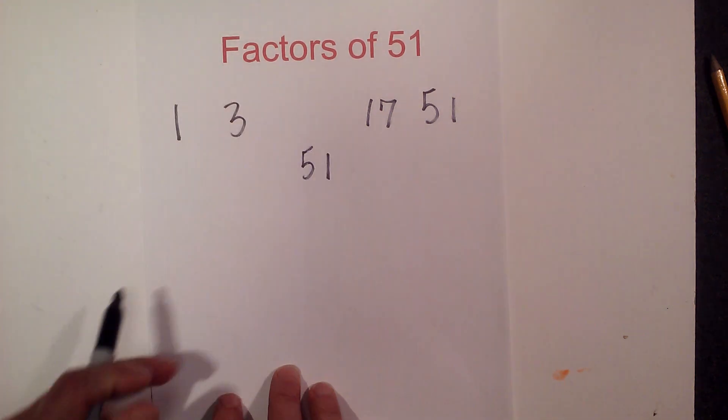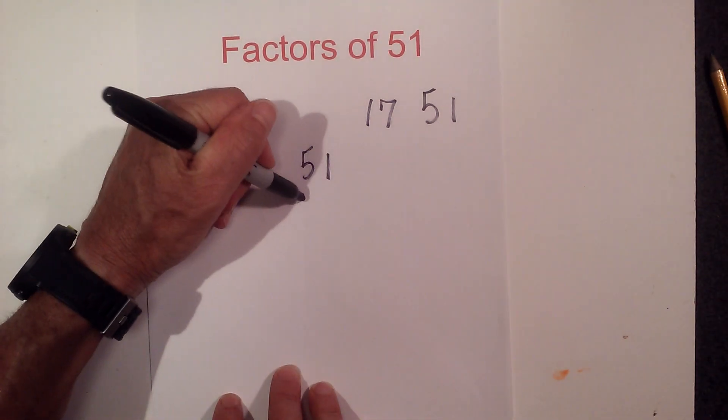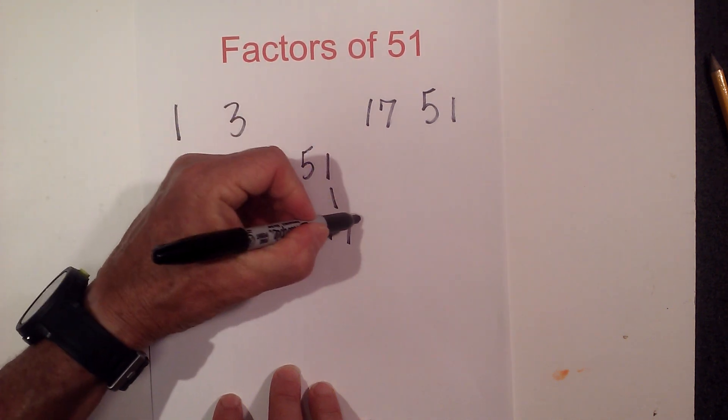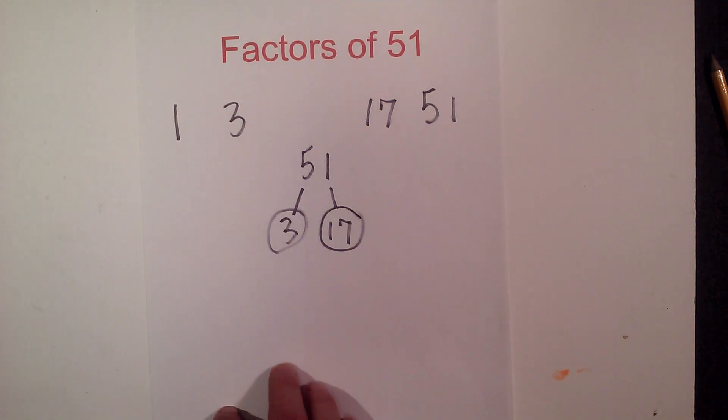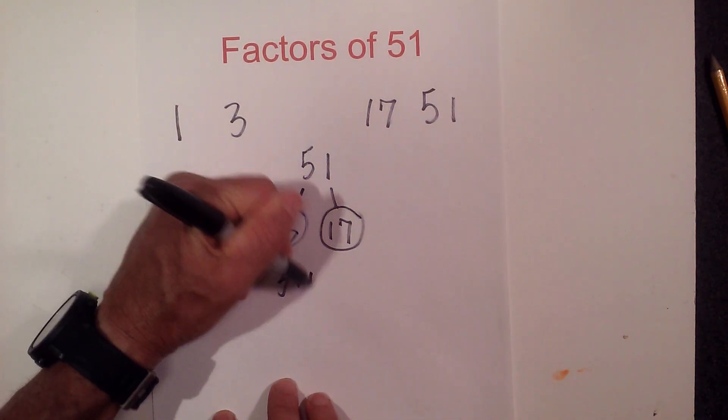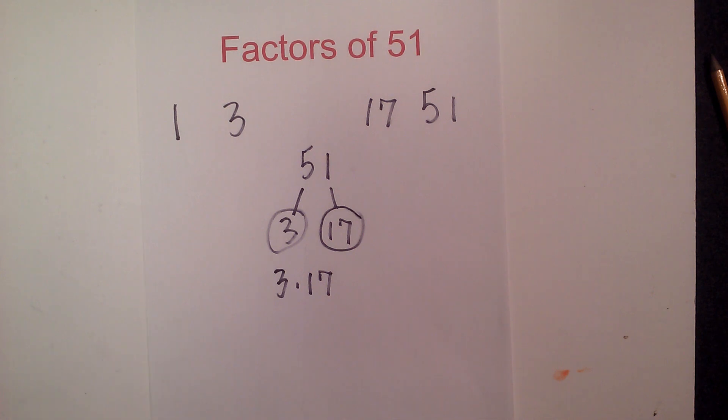If you complete a factor tree, it also does not take long. It is 3 times 17. Circle both of these because they are prime, so the prime factors of 51 are 3 times 17.